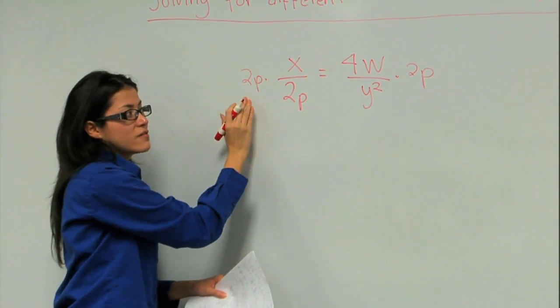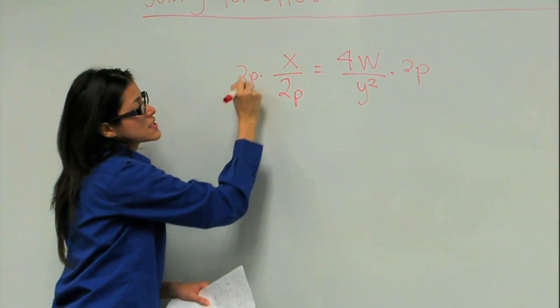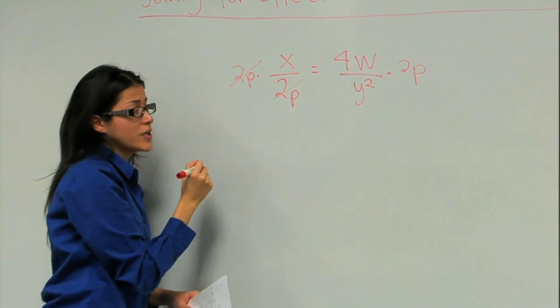Whatever you do on one side of the equation, you have to do on the other side of the equation. By doing this, we cancel the 2p on this side of the equation.